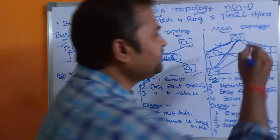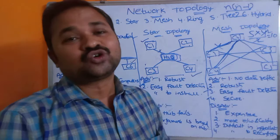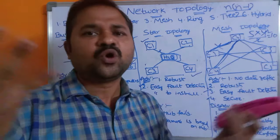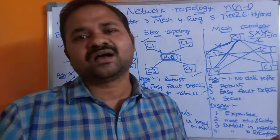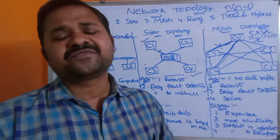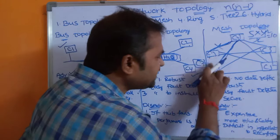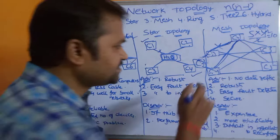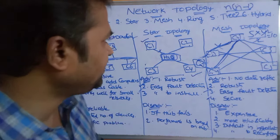The disadvantages of mesh topology: it is very expensive because too many cables are required — 10 links for just 5 computers. More hardware is also required, making it very costly. It is difficult to install since links must be made from each computer to all others. Reconfiguration is also difficult — adding a new computer like C7 between C2 and C4 requires removing existing connections and adding new links to all other computers.